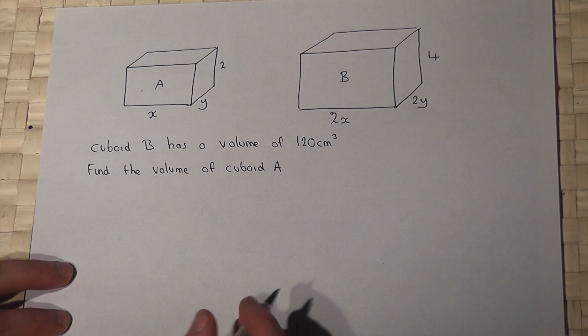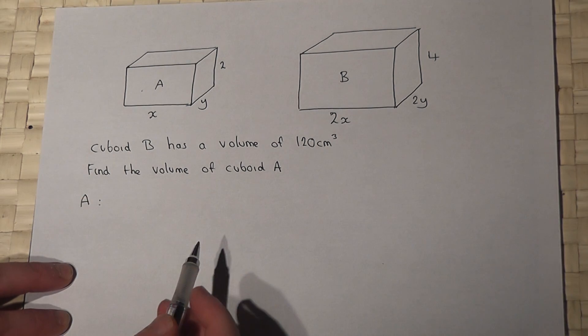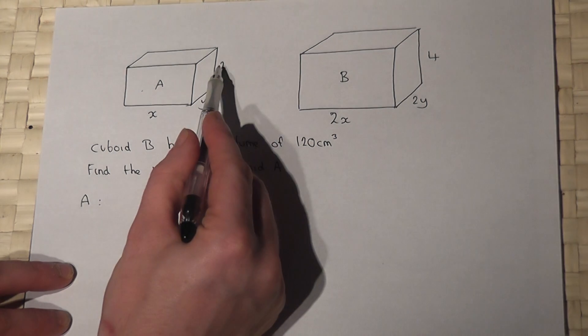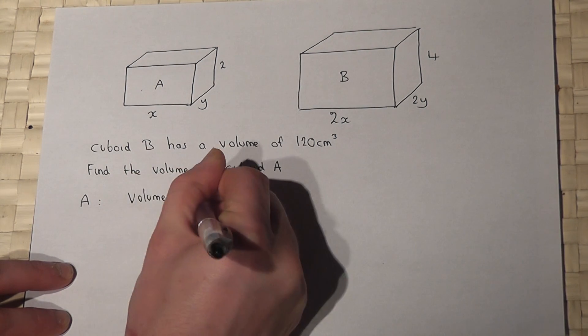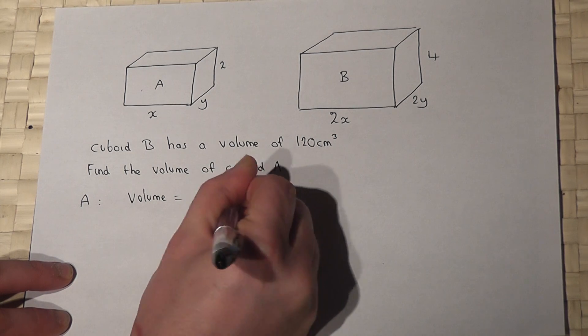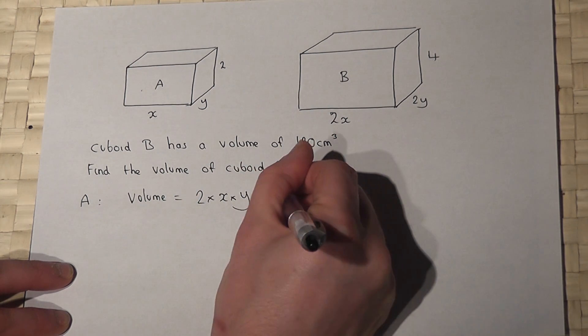If we look at cuboid A, its volume in terms of x and y will be 2 times x times y, which is 2xy.